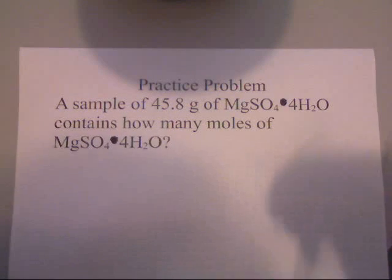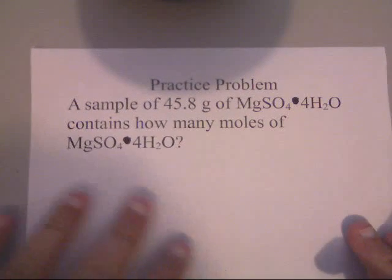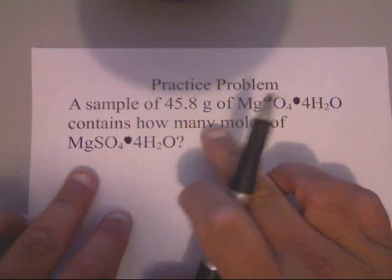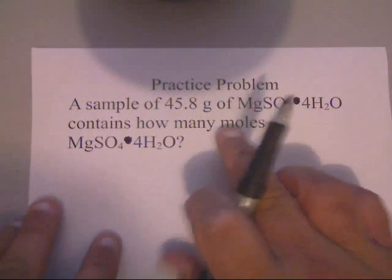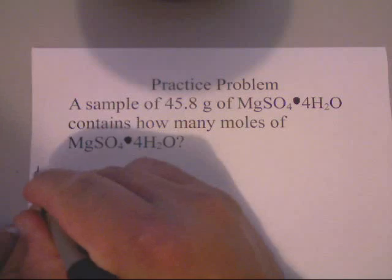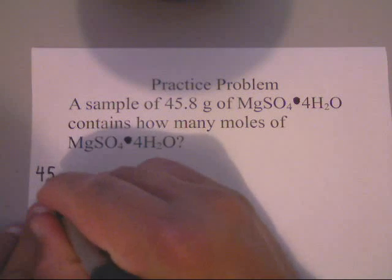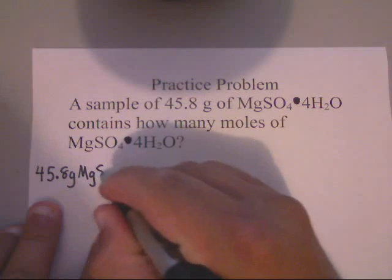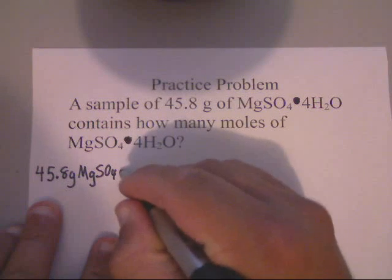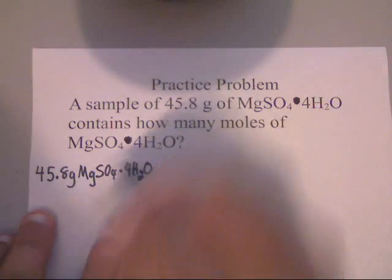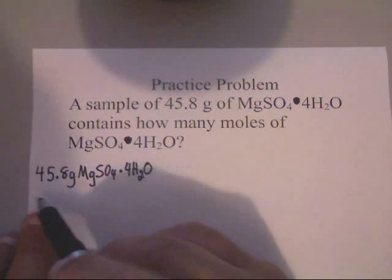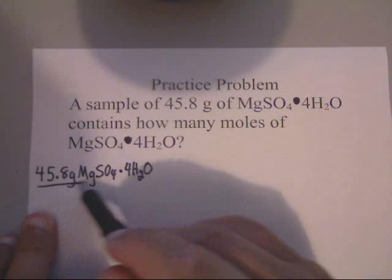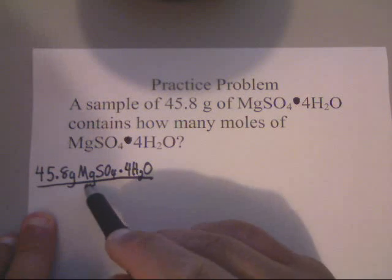Alright, here's one of our practice problems on how to convert from grams to moles. In this problem, what we're going to have to do is write down the given, put it over 1, which is the 45.8 grams of this MgSO4·4H2O. Magnesium sulfate tetrahydrate, fancy name, anyway, over 1.